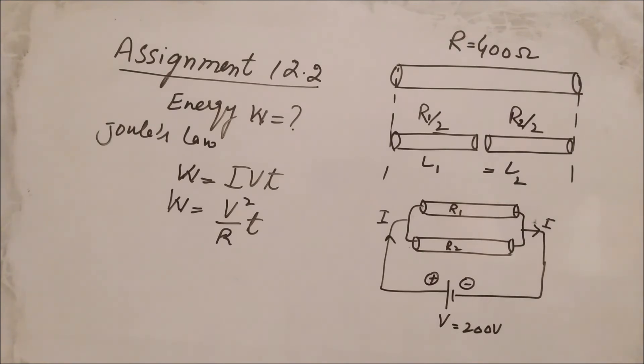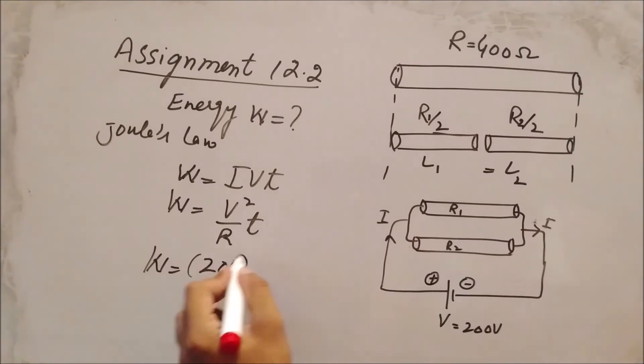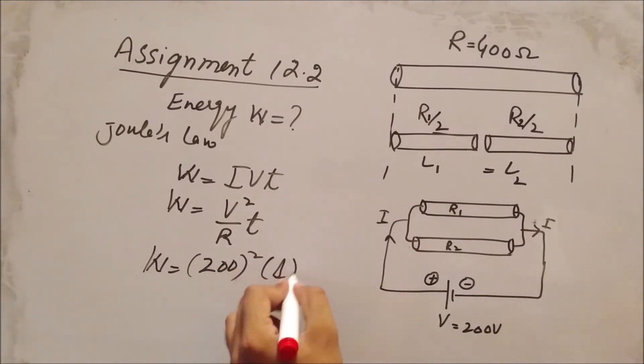We now have all the values: V = 200, t = 1 second, and Req = 100 ohms.